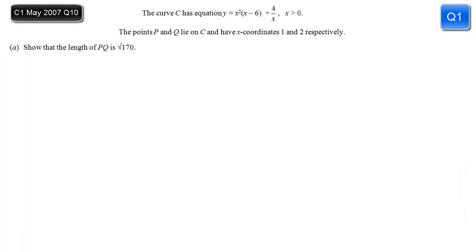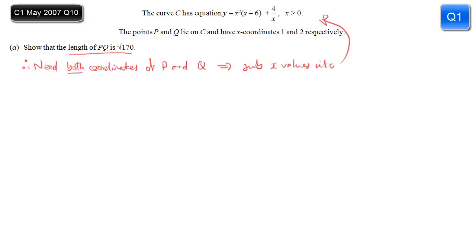In this question, we're given a curve C with the equation y equals x squared, brackets, x minus 6, plus 4 over x. We're told that points P and Q lie on this curve, and we know their x-coordinates. The first thing is to show that the length of PQ is the square root of 170. To find the length of a line between two points, we need to know the coordinates of those points, including the y values. So we'll substitute the x values into the equation to find y.